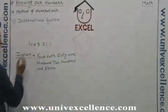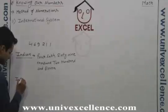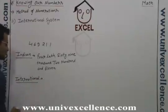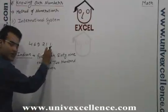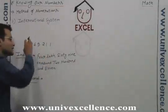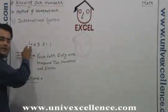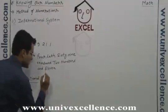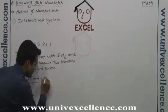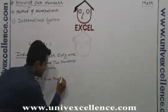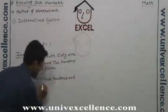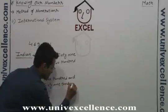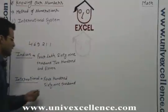But if we write this number in the international system, the place values are: unit, 10, 100, thousand, and then 10,000. Here is the difference — it is not lakh, it is 100,000. So how do you say this number? This number will be said like: four hundred and sixty-nine thousand.